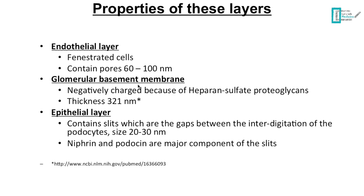Then we have the glomerular basement membrane, which is usually negatively charged at the normal pH of the blood because of the presence of heparin sulfate proteoglycan. The thickness of this layer is 321 nanometers. I'm emphasizing the size because some diseases originating from this layer will increase its thickness.